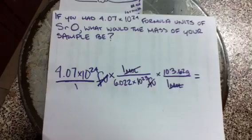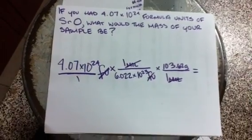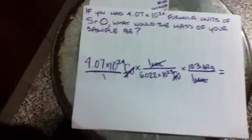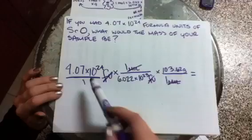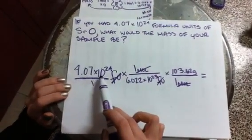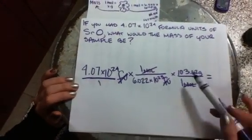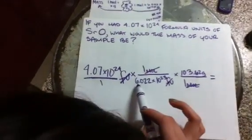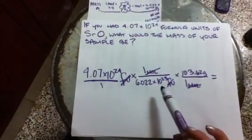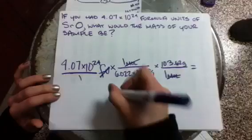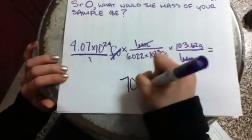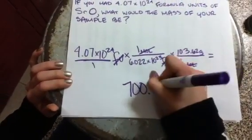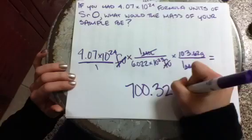And you punch it into your calculator. You do 4.07 times 10 to the 24th multiplied by 103.62 divided by 6.022 times 10 to the 23rd. When you do that, you get 700.32 grams.